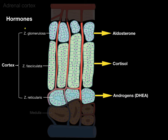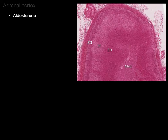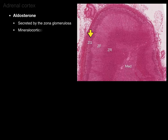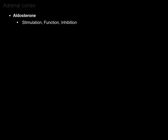Let's focus on hormones from the zona glomerulosa, which is primarily aldosterone. Aldosterone is part of a group called mineralocorticoids — that's technically what the zona glomerulosa secretes — but the main one is aldosterone, and it deals with sodium or salt. It's a steroid hormone, which means it acts intracellularly. The stimulation, function, and inhibition of aldosterone involves a really important pathway.